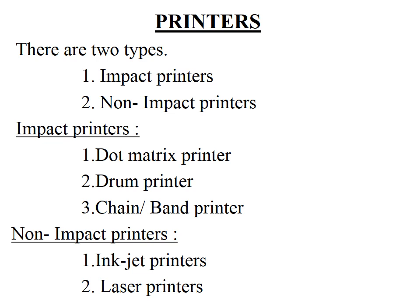Printers are the most commonly used output devices today for producing hard copy outputs. There are two types of printers: impact printers and non-impact printers. Impact printers have been classified into three different types: dot matrix printer, drum printer, and chain printer. Similarly, non-impact printers are classified into inkjet printers, laser printers, and advanced printers also present in today's technology.